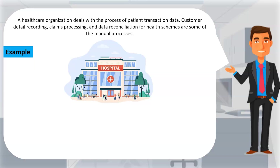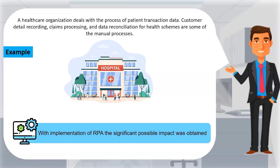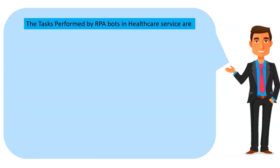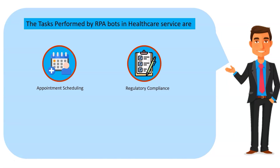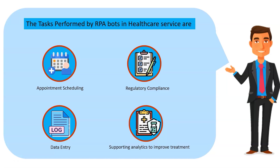These are some of the manual processes they must streamline daily. The primary goal was to increase the efficiency of existing approaches to achieve greater accuracy with reduced turnaround time. Robotic process automation was implemented and the most significant possible impact was obtained. The RPA platform handled claims processing and health data reconciliation, and healthcare was able to reduce turnaround time with this solution. The tasks performed by RPA bots in healthcare service are appointment scheduling, regulatory compliance, data entry, and supporting analytics to improve treatment.